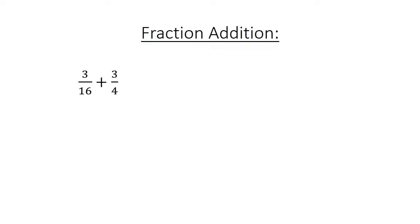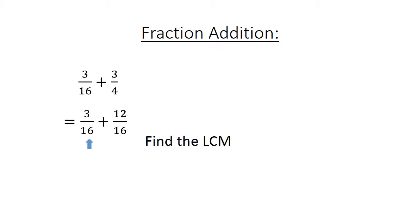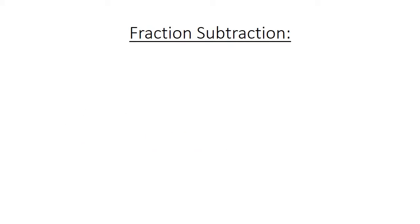Fraction addition: 3 over 16 plus 3 over 4. Find the lowest common multiple: 3 over 16 plus 12 over 16 equals 15 over 16.